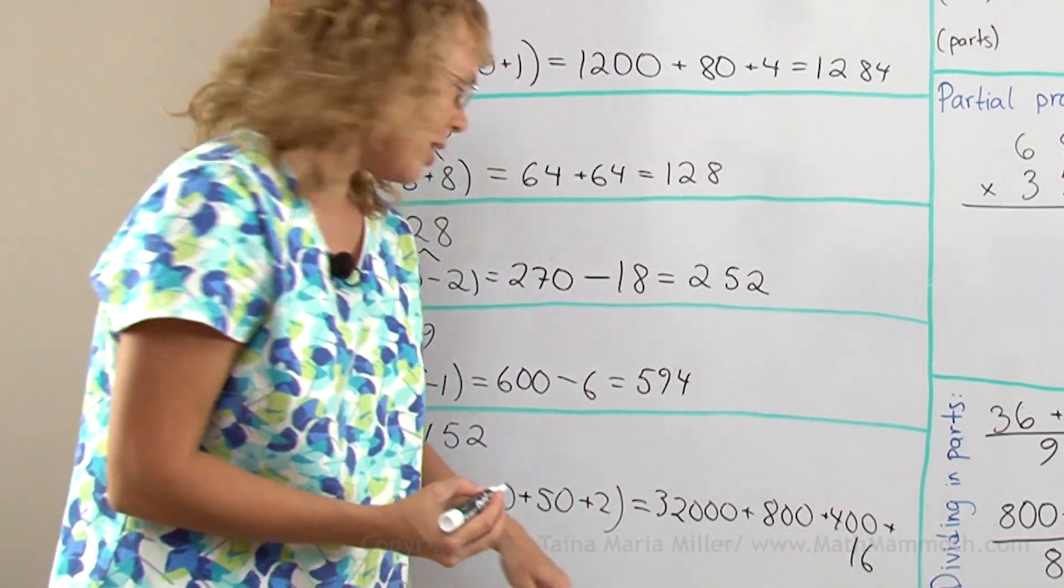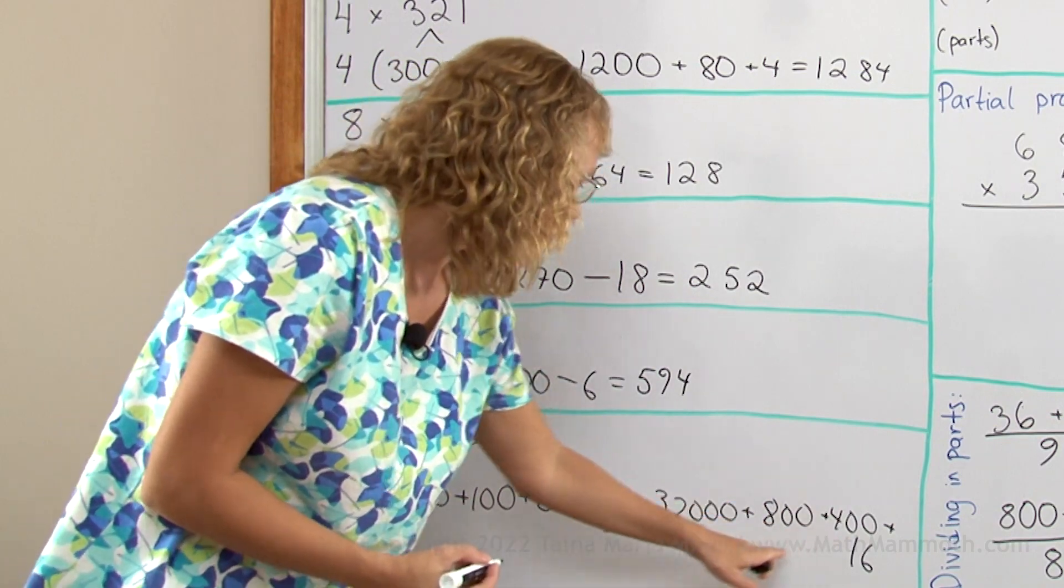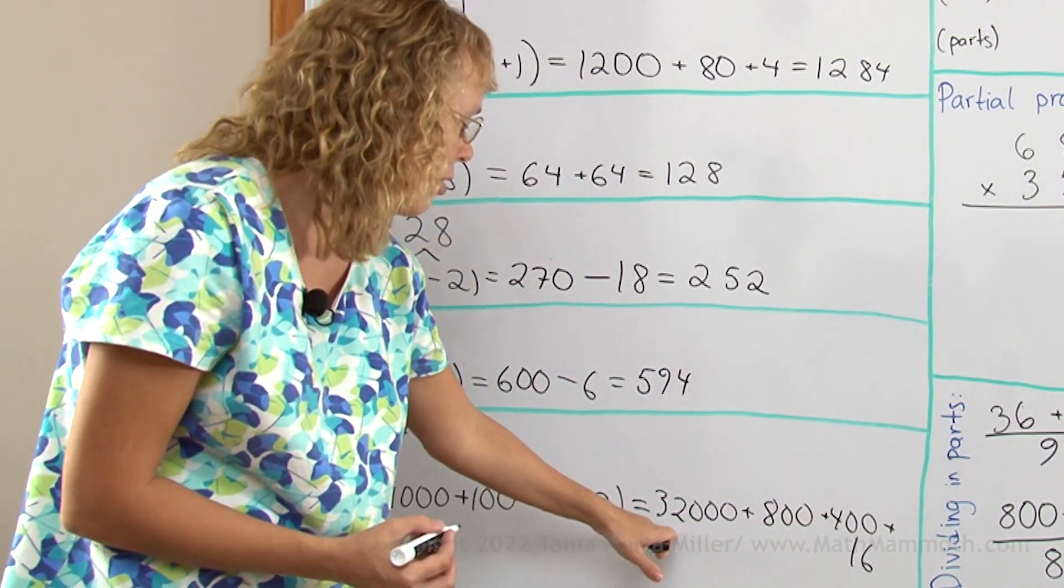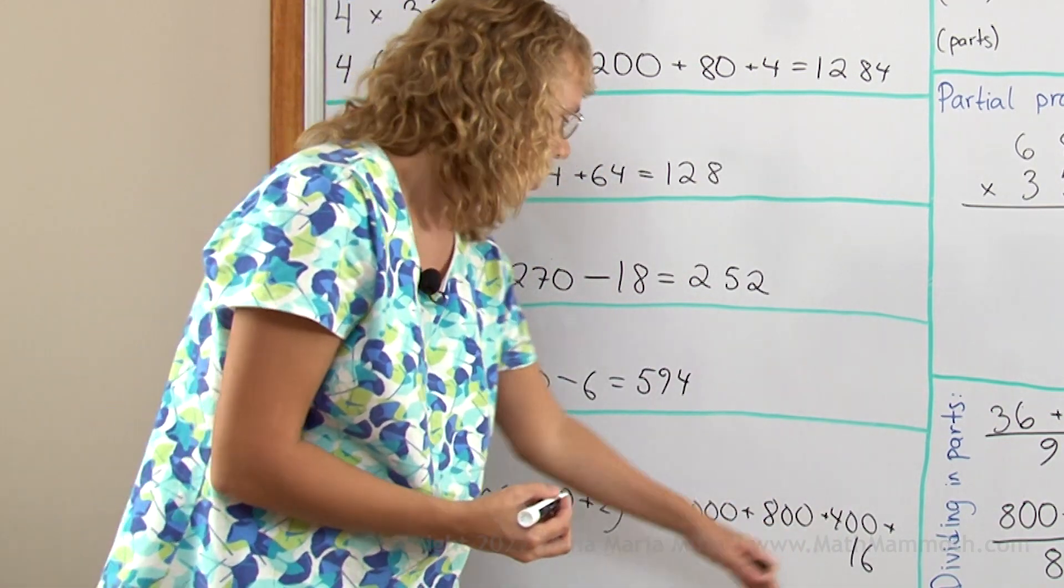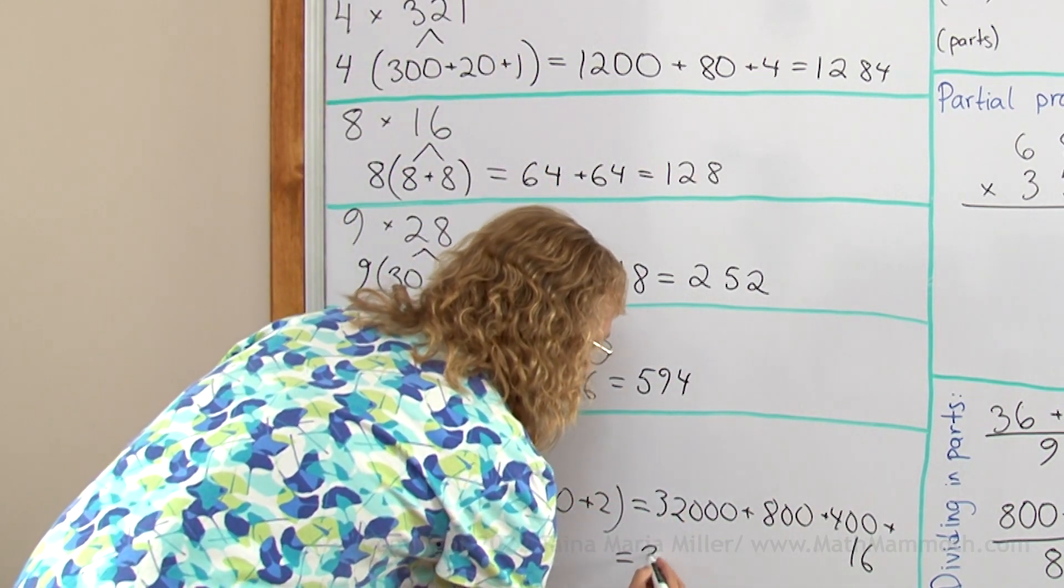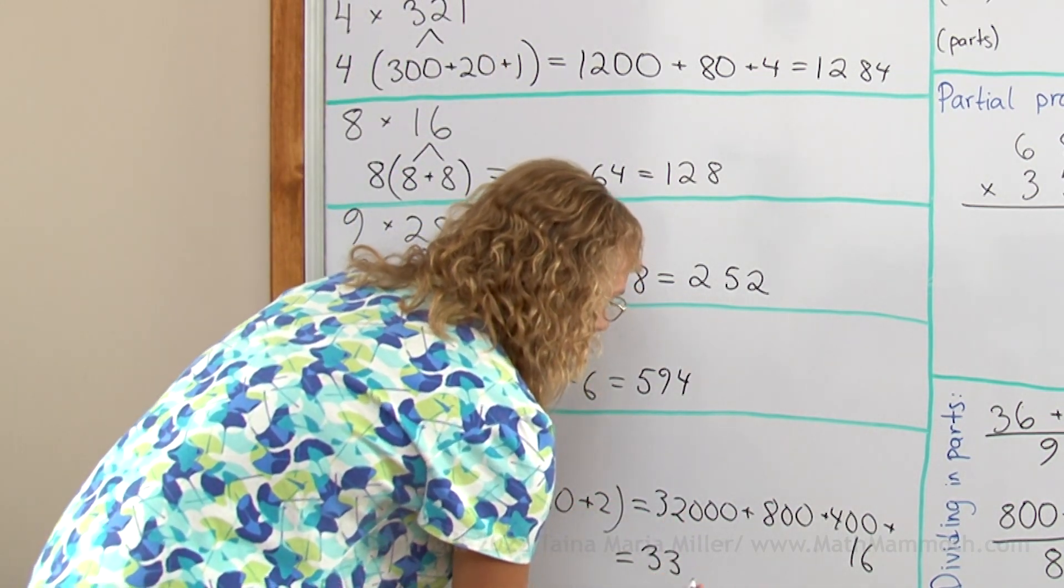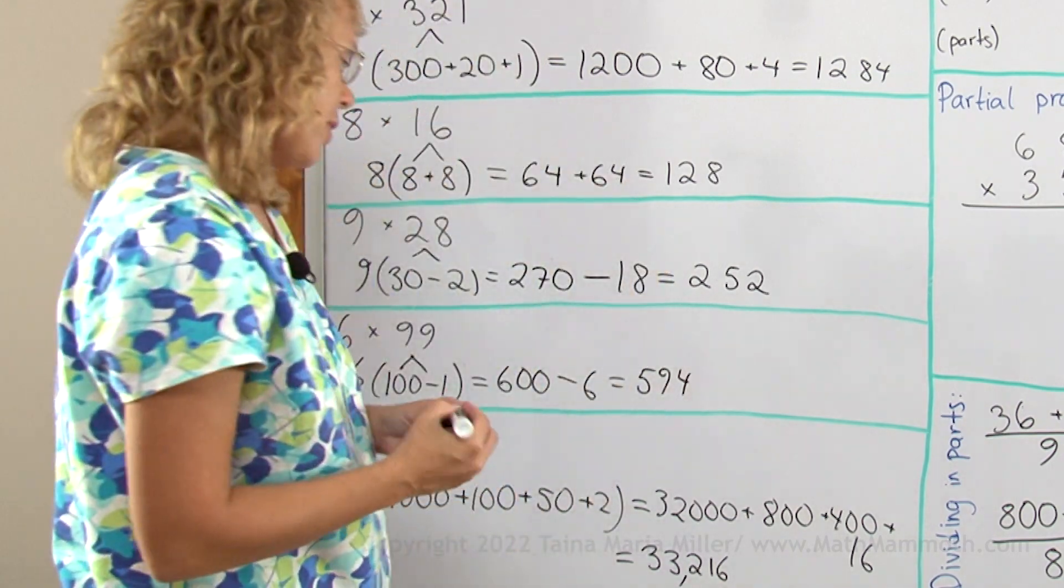I'm running out of space again, but here we have 1200 plus that would be 32,200, and then 16. So the whole thing is 32,216.